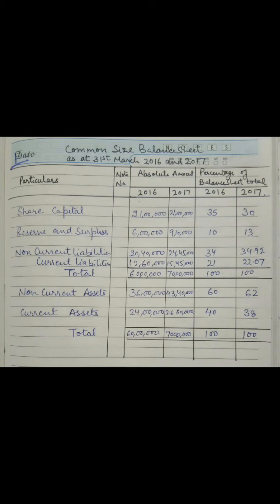For non-current liability in 2016, which is 20 lakhs 40 thousand, dividing by 60 lakhs and multiplying by 100 gives 34 percent. For 2017, non-current liability is 24 lakhs 45 thousand — divided by 70 lakhs into 100 gives 34.92 percent. For current liability in 2016, 12 lakhs 60 thousand divided by 60 lakhs into 100 gives 21 percent. For 2017, 15 lakhs 45 thousand divided by 70 lakhs into 100 gives 22.07 percent.